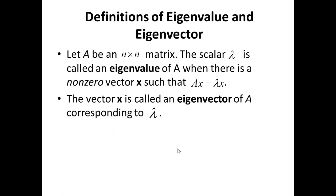Let's look at the definitions of eigenvalue and eigenvector. Let A be an n by n matrix. Then we say Lambda is an eigenvalue of A if there exists a non-zero vector x such that Ax equals Lambda x. X is known as the eigenvector corresponding to the eigenvalue Lambda.